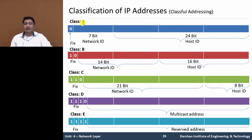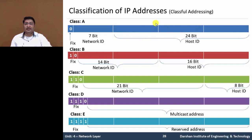In Class A, we have 4 octets: first, second, third, and fourth. The first bit of the first octet is fixed as zero. The remaining 7 bits denote the Network ID. The rest of the 24 bits — 8 plus 8 plus 8 — total 24 bits, is the Host ID.